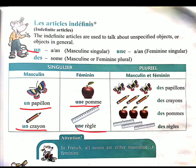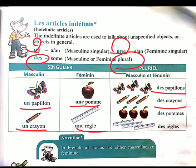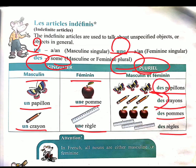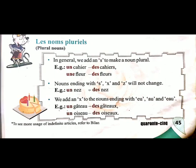The third article is des, which we use with plurals. Des means 'some.' For example: des papillons, des crayons, des pommes, des règles. So whenever a masculine or feminine noun comes into its plural form, we use des before it.